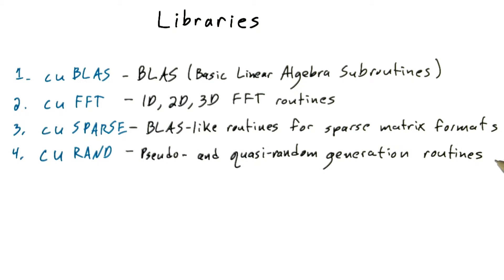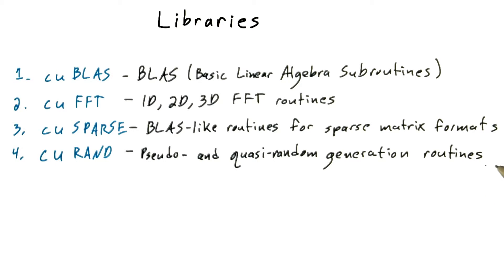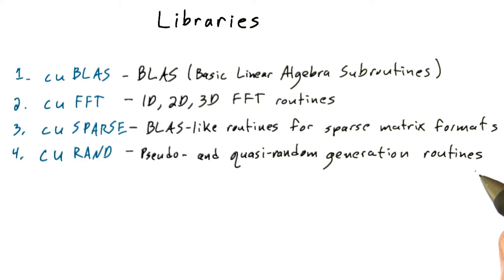CURAND is a collection of pseudo- and quasi-random number generation routines for making random numbers. This includes device-side functions as well as host interfaces for quickly filling arrays with numbers drawn from particular distributions — various high-quality random number generators, basically.